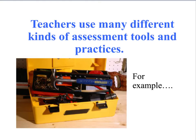Sometimes assessment involves formal assessment tools. These are assessments that are made up by test development companies and are broadly field tested and standardized, and they're used from pre-K all the way up to graduate school. What you see in this picture is an example of two images from the TPRI, which is an early learning assessment not unlike the DIBELS, and this is to determine young kids' vocabulary knowledge — they're asked to look at a picture and say what the item is.